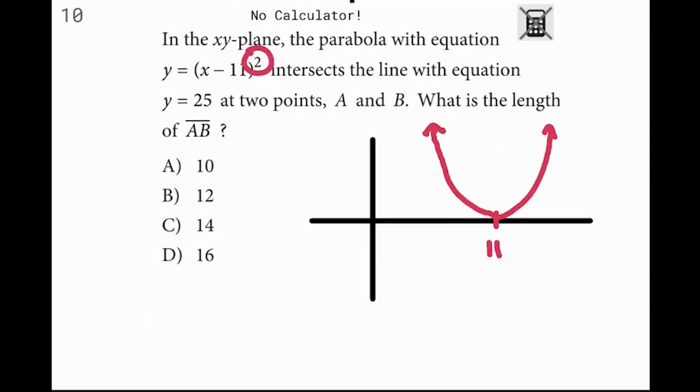You're just trying to get an idea of what's going on here. Y equals 25 is the line that goes through both of those points that are on the quadratic right there. And it says points A and B.